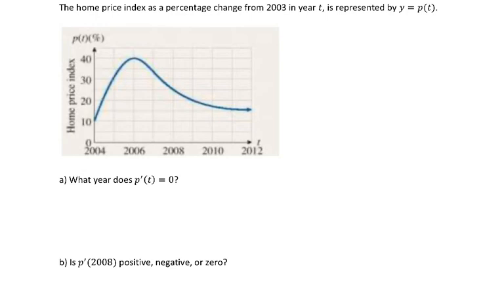So part A, what year does p'(t) equal 0? So remember, whenever we see the derivative, we're thinking about the tangent line, and so we're looking for when the tangent line is 0. And so what kind of lines have 0 slopes would be horizontal lines, right?